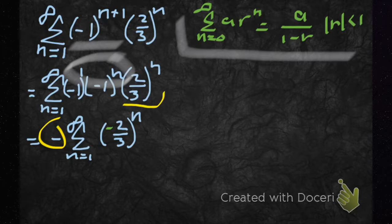Now my r equals minus 2 thirds, and the absolute value of that is smaller than 1.